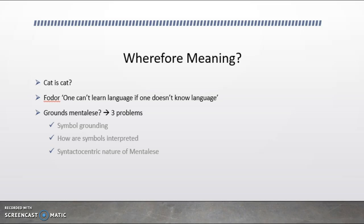The language as instinct thesis says that mentalese is the basis because it allows us to acquire meaning to begin with. We could say that this pre-existing language of thought is the reason that children can grow up and learn to use words in their mother tongue. As Fodor said, one can't learn language if one doesn't know language.